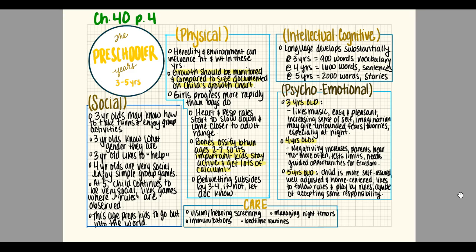The next stage is preschooler, from three to five years. Socially, three-year-olds may know how to take turns, enjoy group activities, know their gender, and like to help. Four-year-olds are very social and enjoy simple group games. At five, the child continues to be very social, likes games where rules are observed. This whole preschool age generally preps kids to go out into the world and get ready for the K-12 school system.